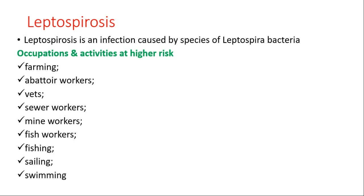The bacteria live inside the animals' kidneys and are passed out in urine. They can survive for weeks or months in soil or water. The bacteria do not only enter the body through the mouth; they can also damage the mucous membranes of the eye, nose, and mouth.